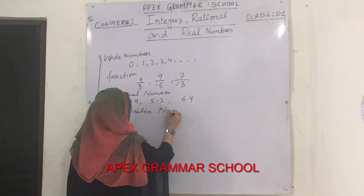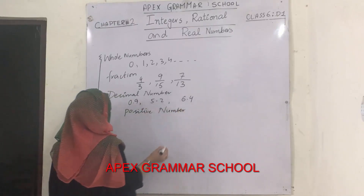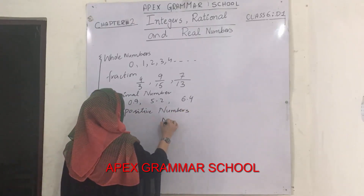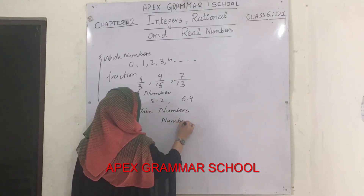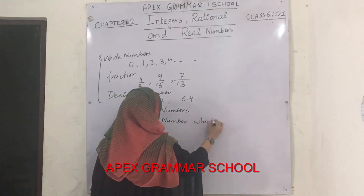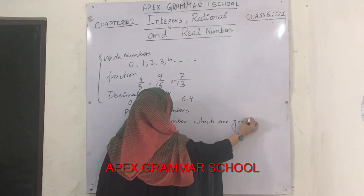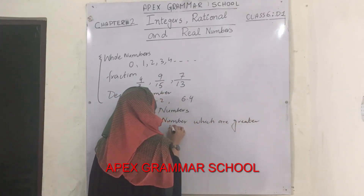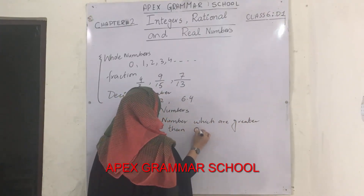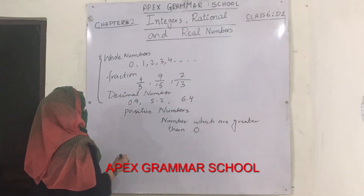These all numbers are called positive numbers. The definition of positive numbers: numbers which are greater than 0 are called positive numbers.